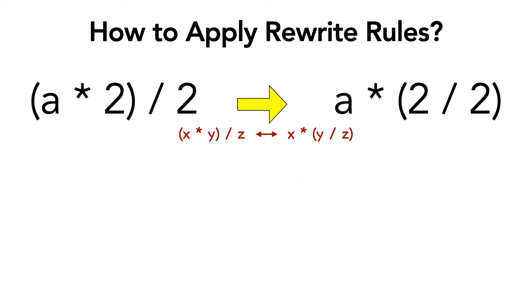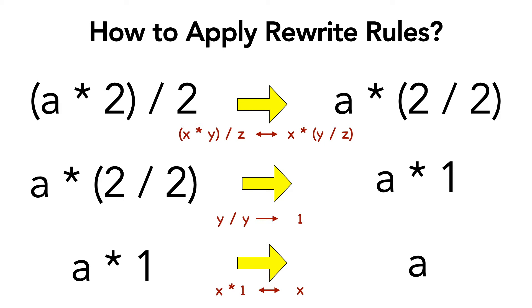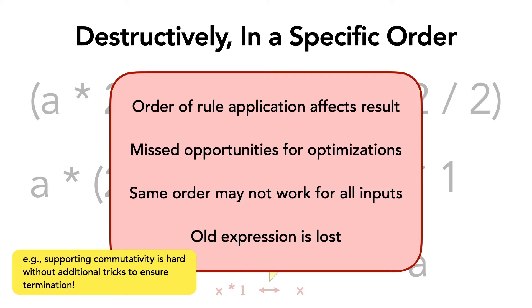First, we apply the rewrite rule that reassociates the multiplication and division. Then we apply the rule that rewrites 2 divided by 2 to 1. And finally we apply the identity rule to get a. Now this order of rule application worked for this example, but we cannot say for sure that it will work for other inputs as well.